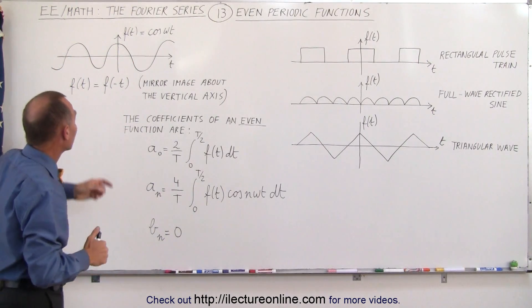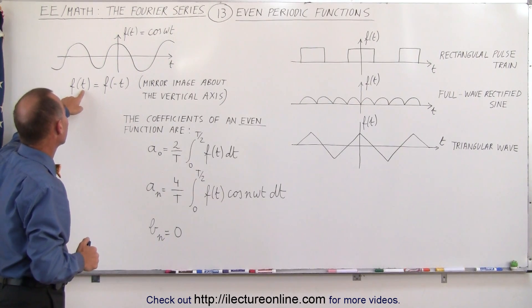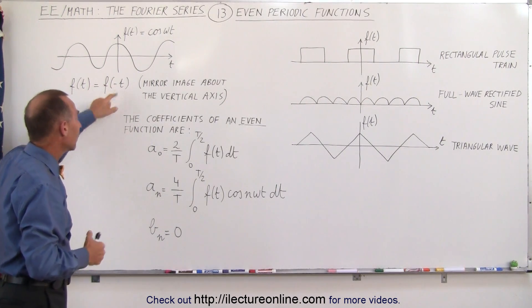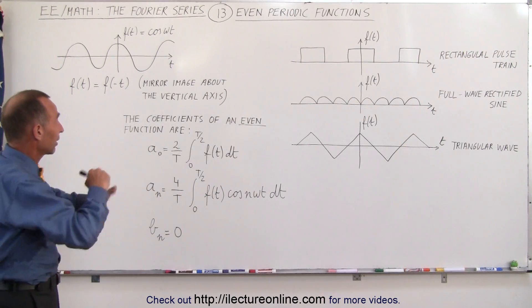Another way of thinking about an even function is if we replace every independent variable t by a negative t, we get the exact same function. That's what that really means.